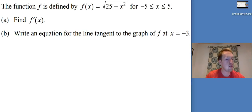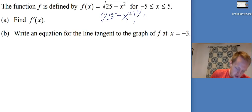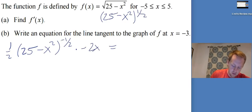The function F is defined by F of X equals squared to 25 minus X squared part A, find F prime of X. Usually the FRQs don't have questions quite that simple, so we got lucky on this one. I'm going to rewrite this as 25 minus X squared to the power of 1 half. So now I'm going to take the derivative. I'm going to have to use chain rule. It's going to be 1 half 25 minus X squared to the negative 1 half times negative 2 X, which if I rewrite that is going to be negative X over the square root of 25 minus X squared. So that's F prime.